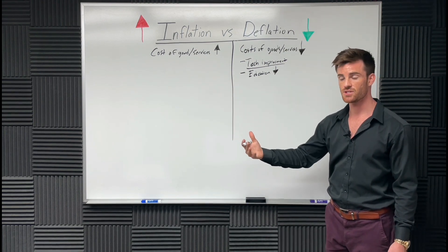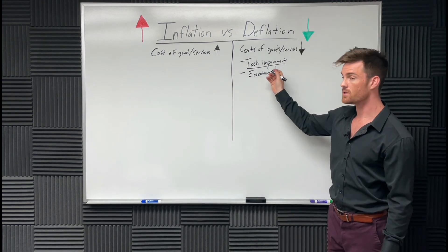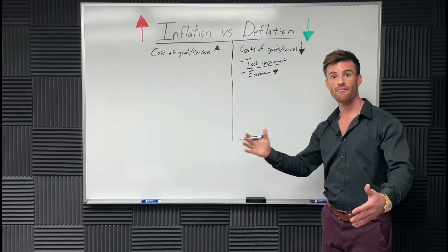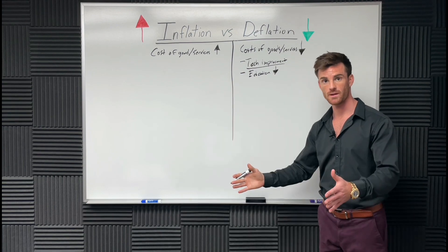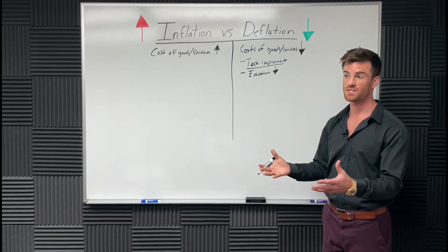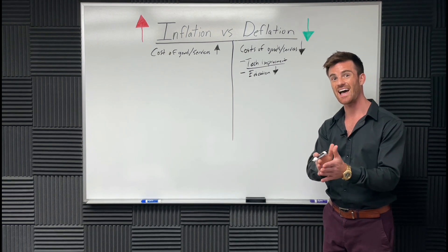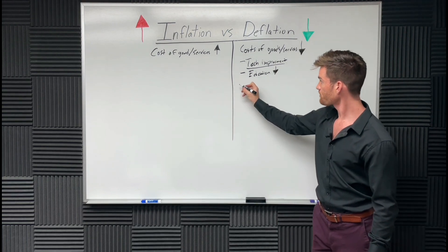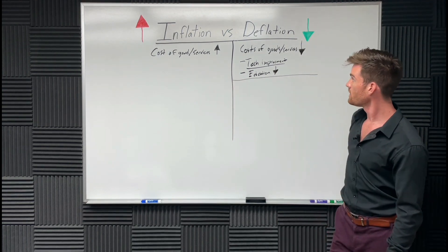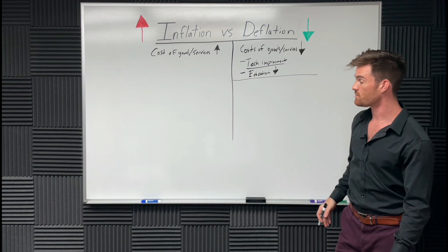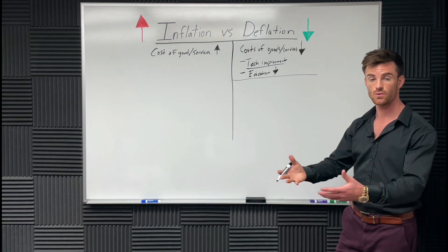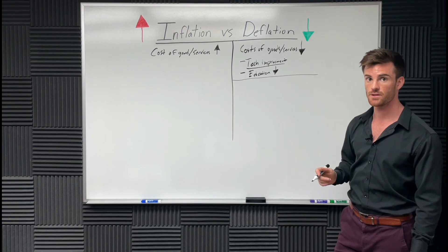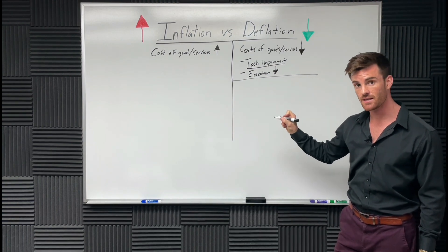Tech improvements make things deflationary. Say a car used to go 80,000 miles. Now a car might go half a million miles because of the tech improvement. That's a deflationary thing. That car might be expensive, but it's deflationary because it lasts a lot longer. Those are examples of a deflationary world. Inflation is basically when our gas costs more money, our food costs more money, everything costs more money.